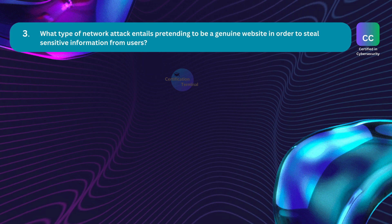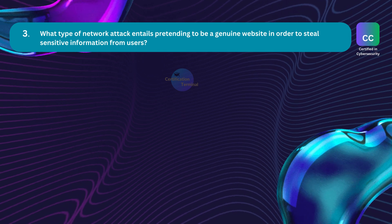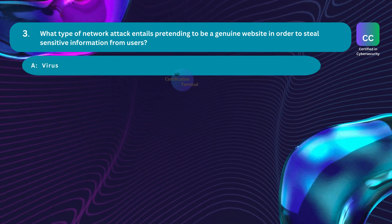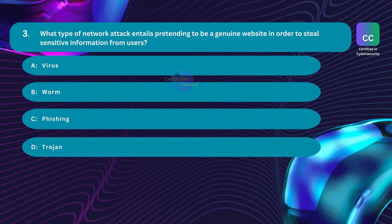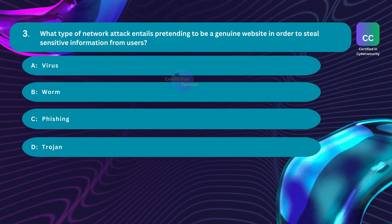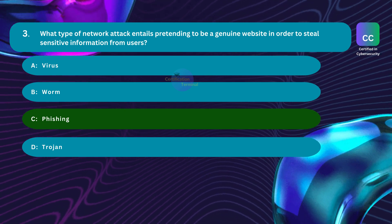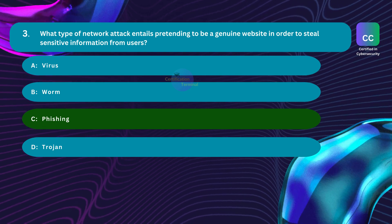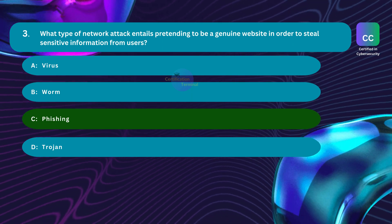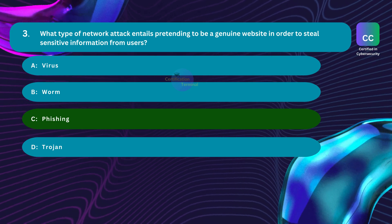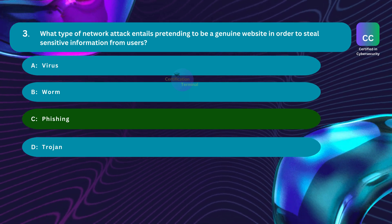Question number three: What type of network attack entails pretending to be a genuine website in order to steal sensitive information from users? Option A: virus. Option B: worm. Option C: phishing. Option D: trojan. The correct answer is Option C, phishing. Phishing is a cybercrime tactic involving fraudulent attempts to obtain sensitive information such as usernames, passwords, or credit card details by disguising as a trustworthy entity, typically via deceptive emails, messages, or websites that mimic legitimate sources.